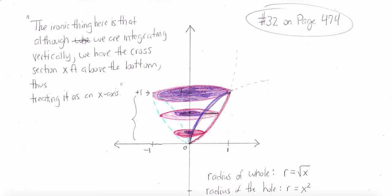Here's the ironic thing. The ironic thing is that although we are integrating vertically, we have the cross-section x feet above the bottom. So in other words, let's not get lost in the letters. We actually just should have called this y feet above the bottom, but they decided to call it x. So if you pop a y in here instead of x, it makes way more sense.